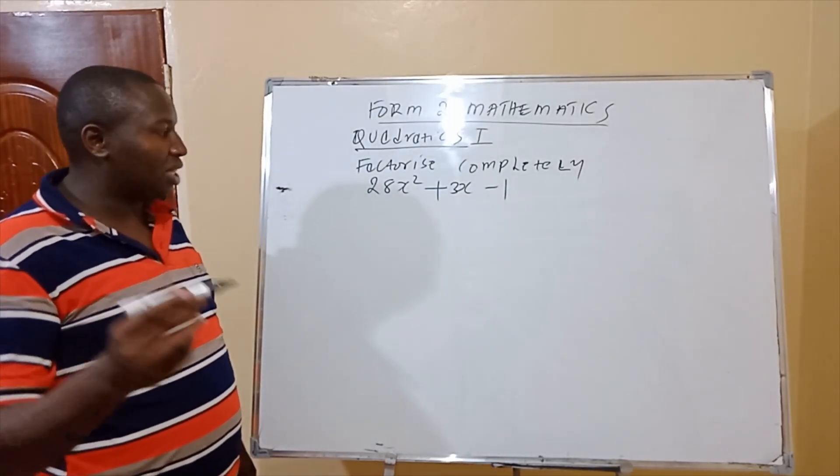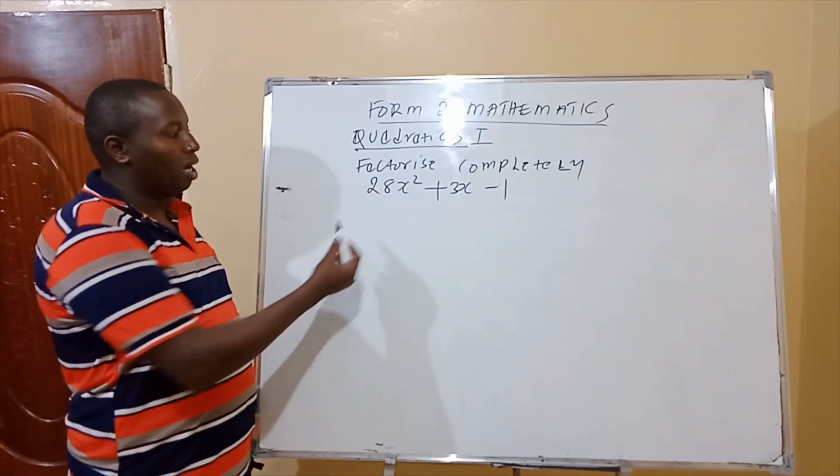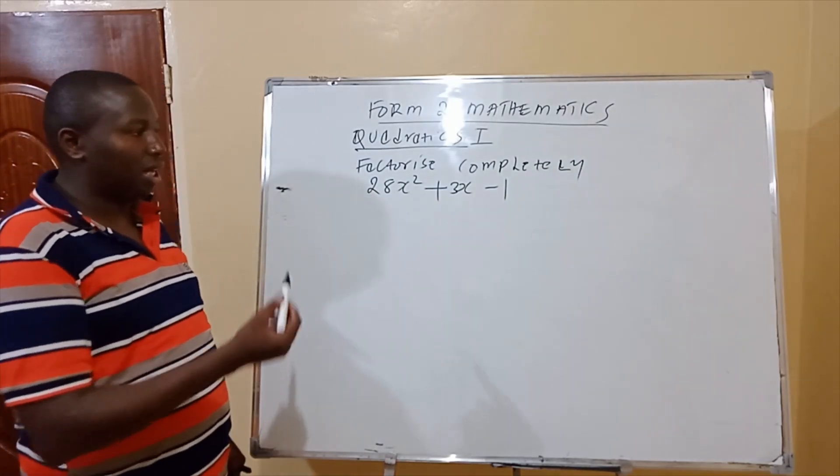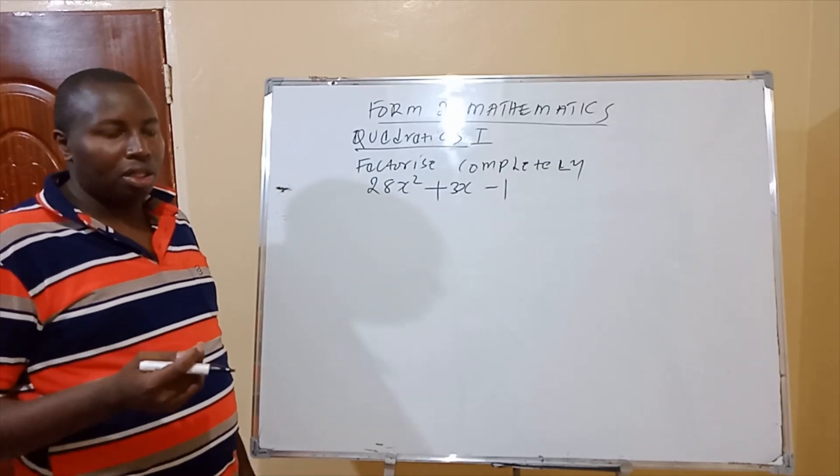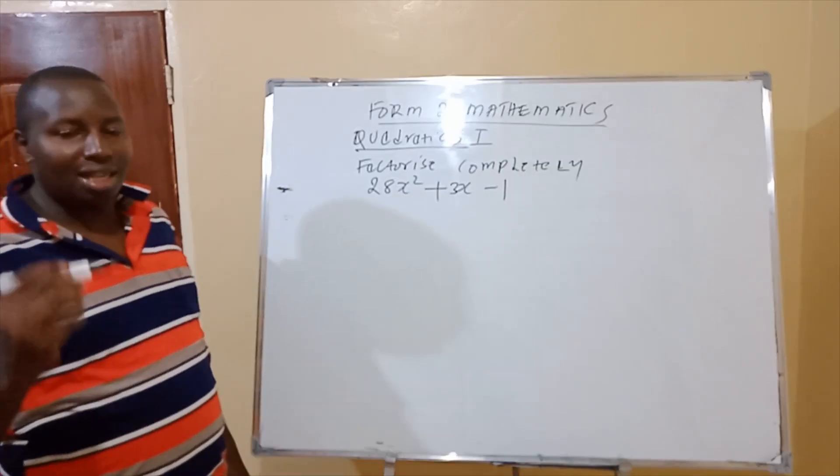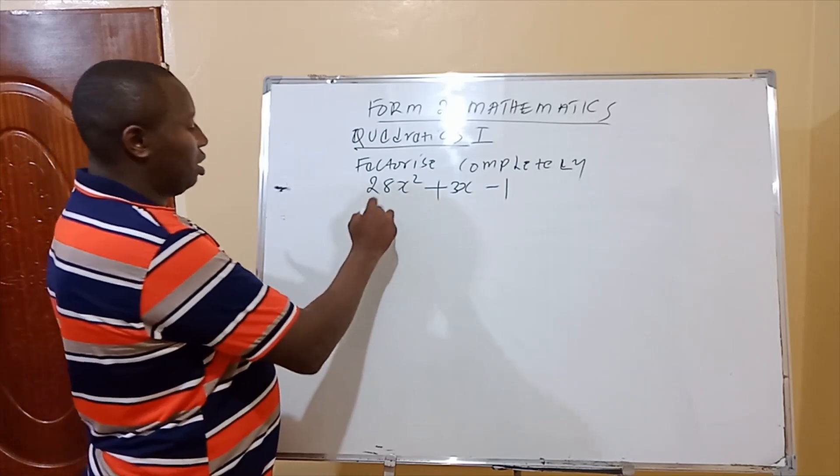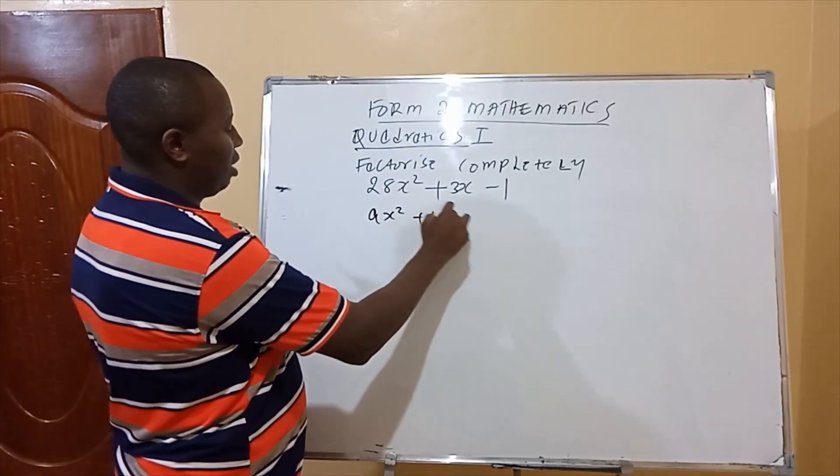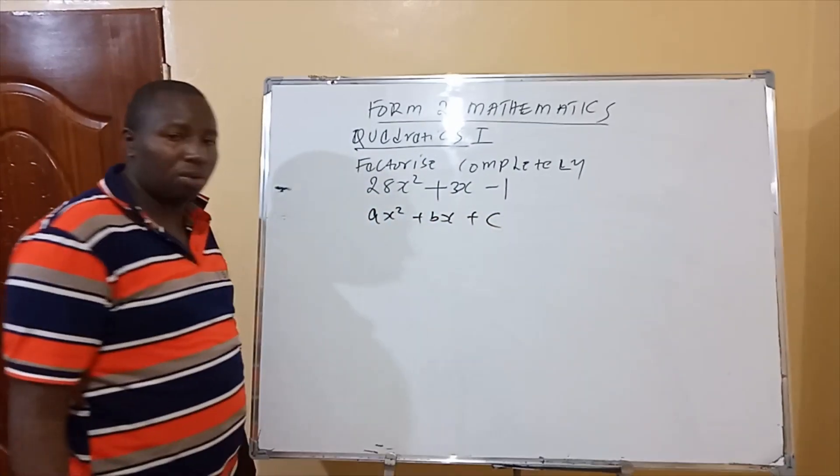So the question that we have provided here is 28x squared plus 3x minus 1. We are going to write the standard quadratic expression, which is ax squared plus bx plus c. This is a standard quadratic equation.